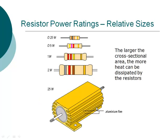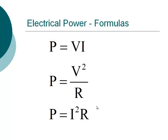Resistors are very susceptible to burning out if there's too much power in the circuit. So not only do you have to specify the resistance value — say a 47 ohm resistor — but you also have to specify what power rating you need. The basic formula is P = VI, but if you don't know the current, you can use P = V²/R. And if you don't know the voltage, you can use P = I²R.